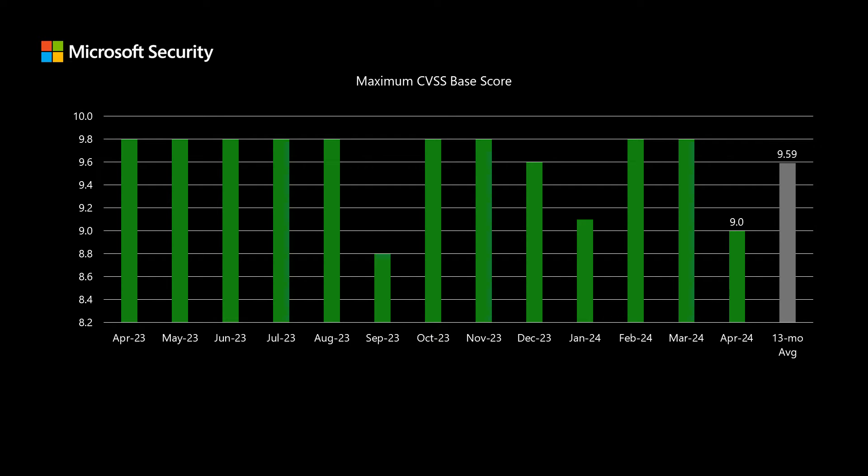Microsoft uses the industry-standard Common Vulnerability Scoring System, or CVSS — a scale between 1 and 10, where 10 presents the most risk. This allows software and hardware vendors to compare and contrast different vulnerabilities across different products, services, and vendors on an even scale. A 9.0 vulnerability in Windows would typically present the same level of risk as a 9.0 vulnerability in Azure or another vendor's product. This month, the highest score of any vulnerability is 9.0 on that scale. We've been averaging right around 9.6 for the past 13 months.